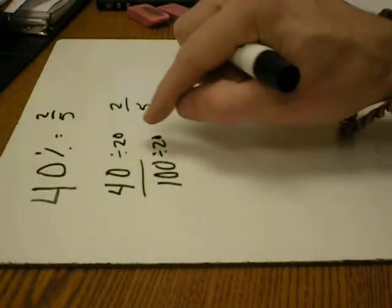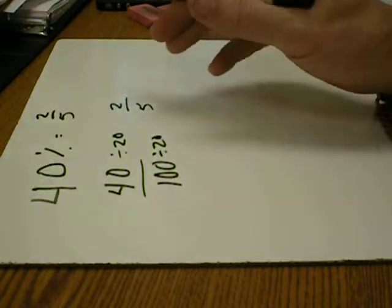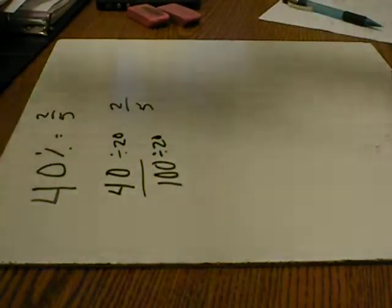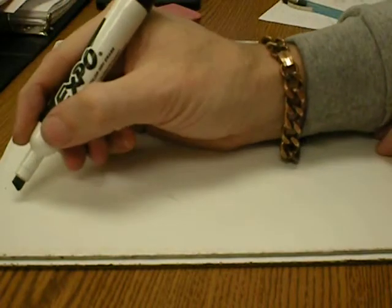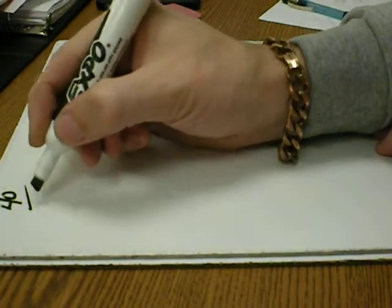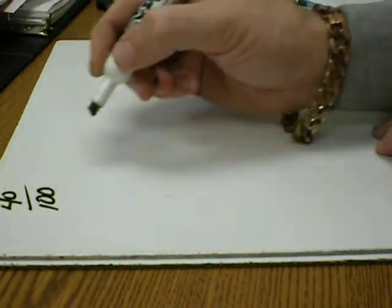Now, the only thing that may be confusing is how I came up with the greatest common factor. Let me show you one method here. I find the greatest common factors of 40 and 100.